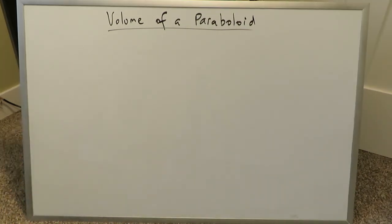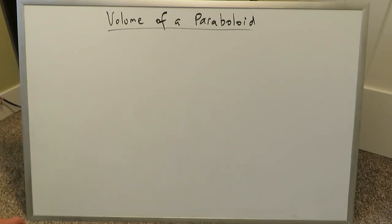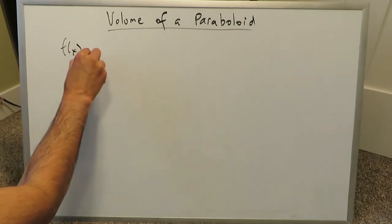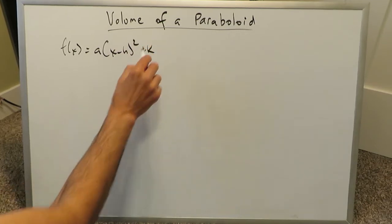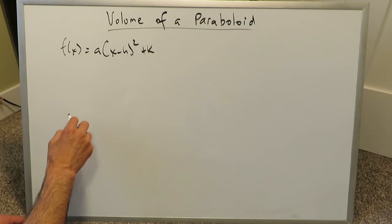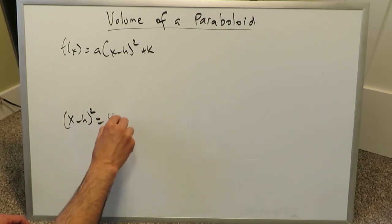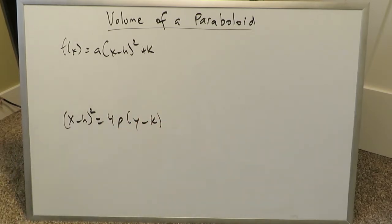Depending on how you look at parabolas, there are two ways for a vertically oriented parabola to write an equation. In terms of quadratics, you have a formula which looks like f(x) equals a times (x minus h) squared plus k — the standard form of a parabola directed upwards. But when you're studying conic sections, you see this equation pop up: (x minus h) squared equals 4p times (y minus k), because this brings a focal point into it. Generally, these equations are the same.